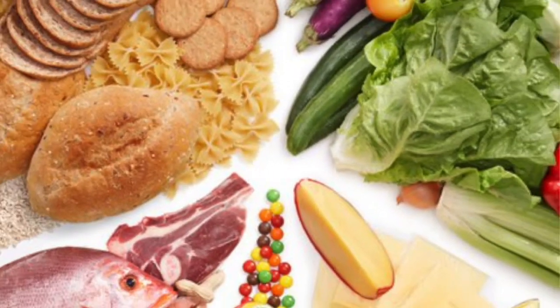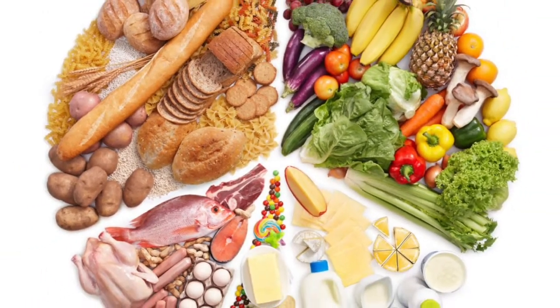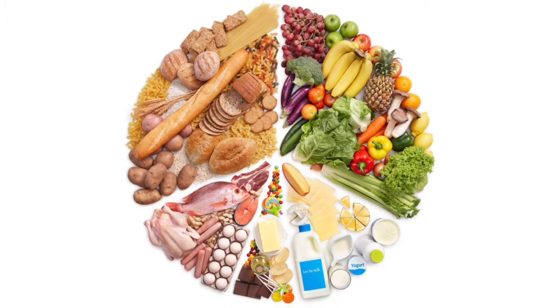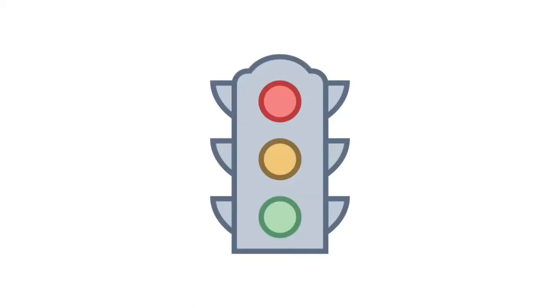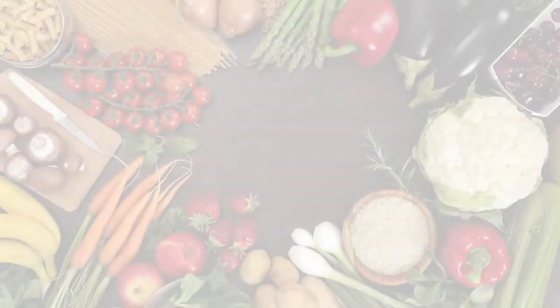There is so much delicious food available, but do you know how to create a healthy meal? With the help of these traffic lights, you can start by dividing your food into three groups of green, amber and red.